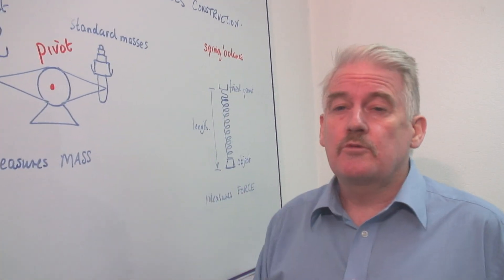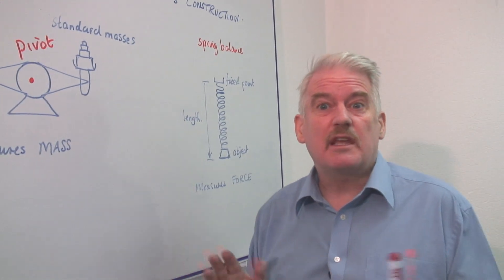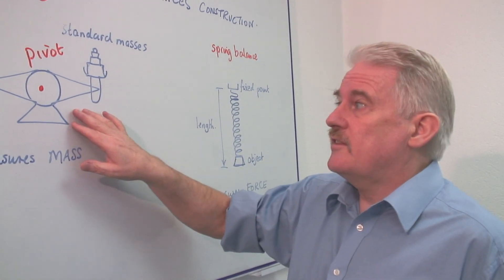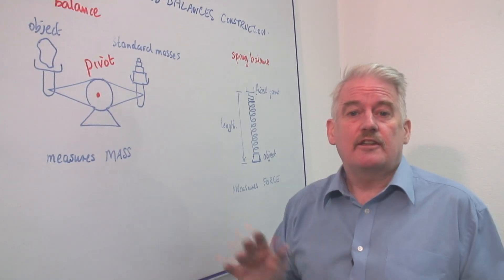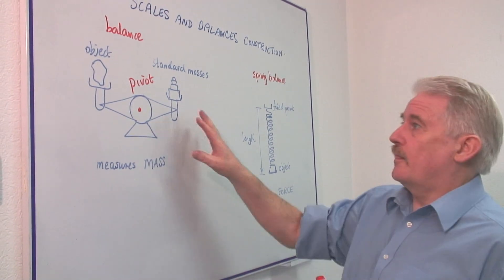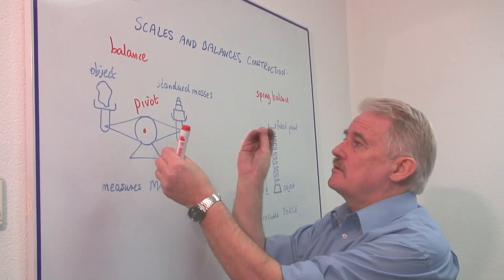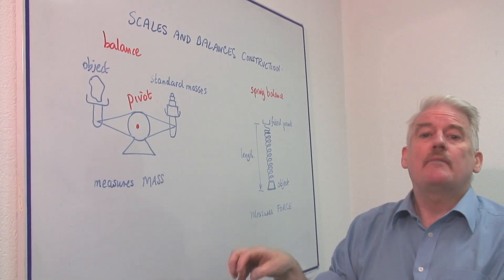Some of these devices will measure to a thousandth of a gram easily, and even less. But generally, this is the kind of thing you might find in the old-fashioned kitchen also. So this is a balance which depends on standard masses. We have standard masses.